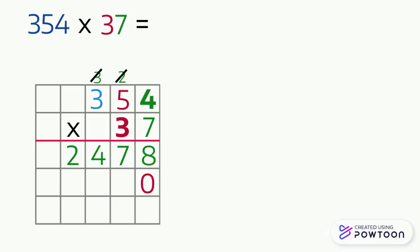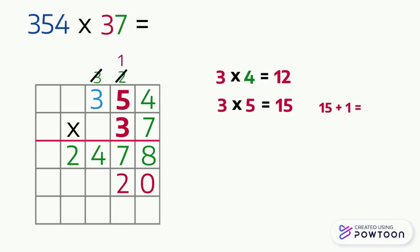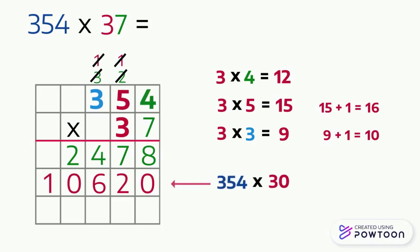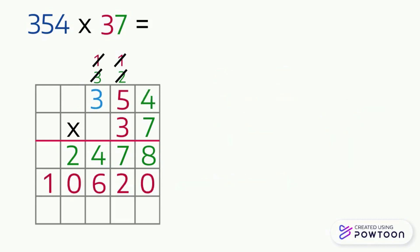We multiply 3 by the ones digit, which is 4 — three times four equals 12. We write 2 and carry 1. Then we multiply 3 by the tens digit, which is 5 — three times five equals 15, plus the carry of 1 gives us 16. We write 6 and carry 1. Now multiply 3 by the hundreds digit — three times three equals 9, plus the carry gives us 10. Since there are no more digits, we write 10 directly. So 354 times 30 equals 10,620.